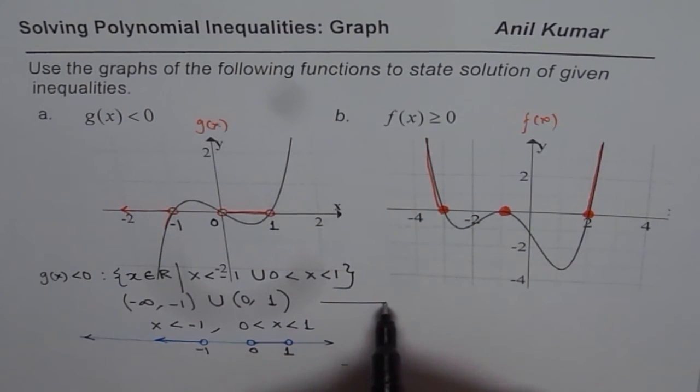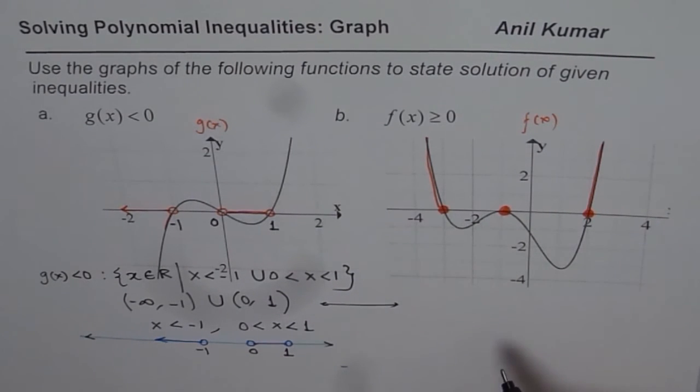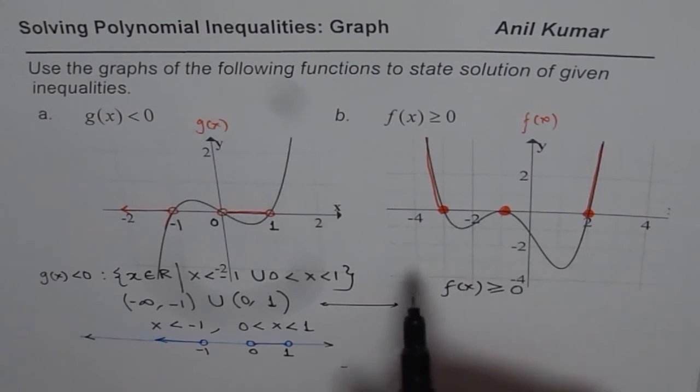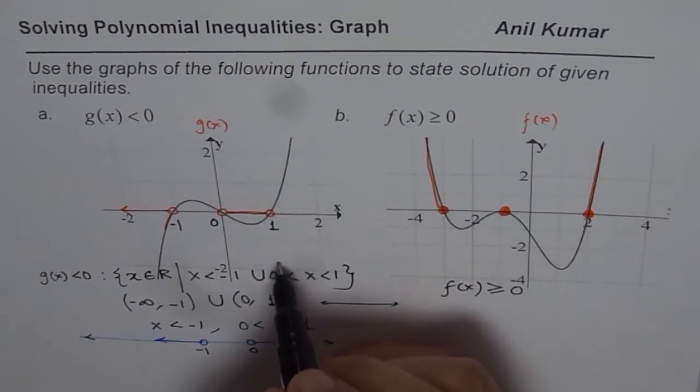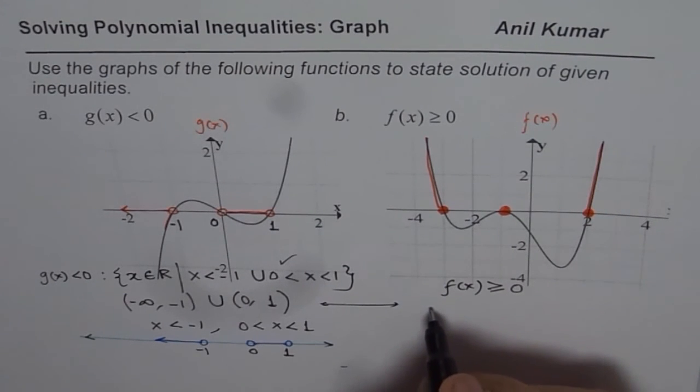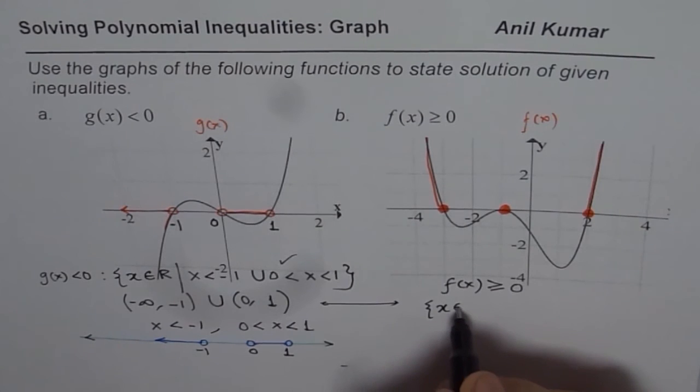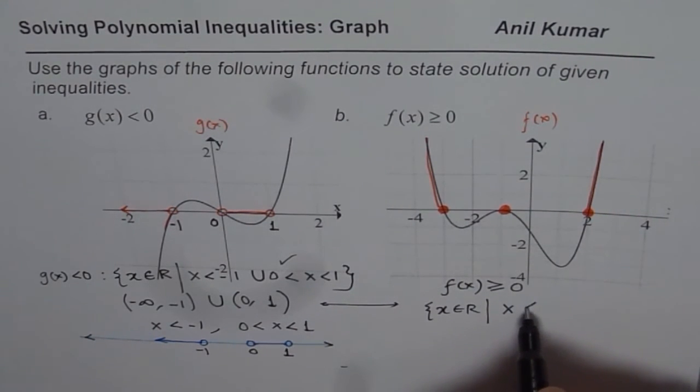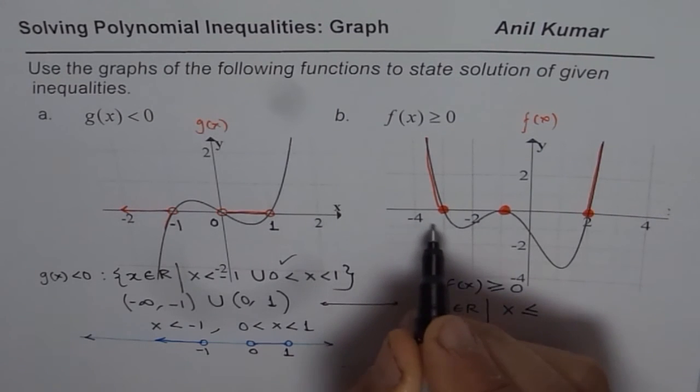This time I will use this particular form to express my solution. So for f of x greater than or equal to 0, I could actually, let me use this particular form. This is more elaborate. So we have solution as x belongs to real numbers, where x is less than equal to minus 4.